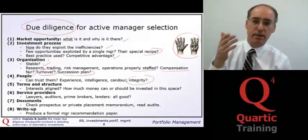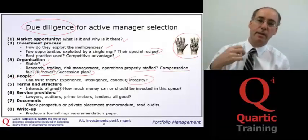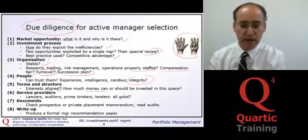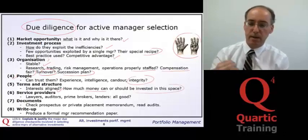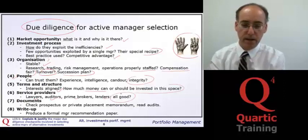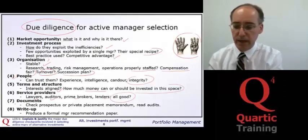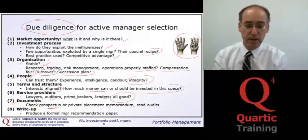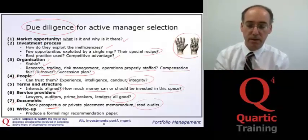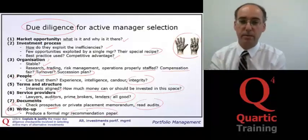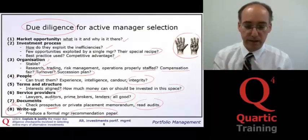The fifth area is terms and structure: are investor interests aligned with those of the fund manager, and how much capital should we invest? Sixth, we look at service providers — lawyers, auditors, prime brokers, and lenders — and whether they have a good reputation. Seventh, we check documents such as the prospectus, private placement memorandum, and company audits. Finally, we write up a formal recommendation on whether to proceed with the manager and for which reasons.